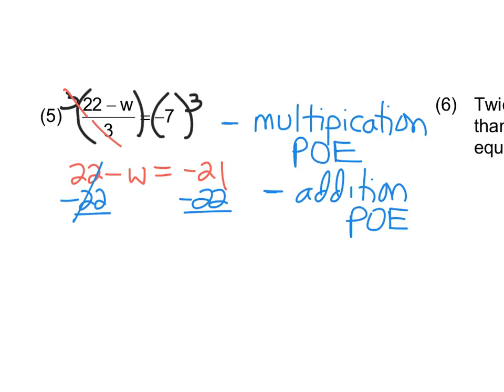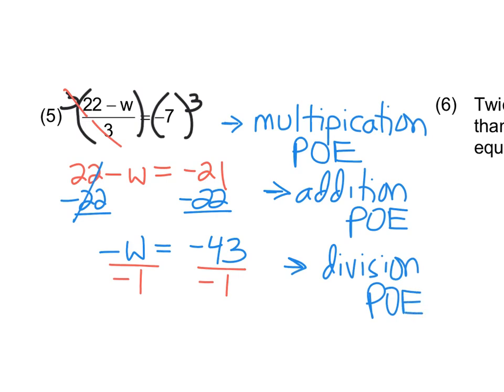But technically, we call that addition and subtraction. We call that addition POE because subtraction is just a special form of addition. All right, so we're looking at negative W equals negative 43. Final step would be to divide by negative 1, and our justification for that is what? Multiplication POE. Multiplication POE. Or you could say division. I'll say division this time. All right. Just to mix it up a little bit. You could say multiplication POE. You could say division POE. Or you could say multiplicative inverses either way, depending on the instructions.